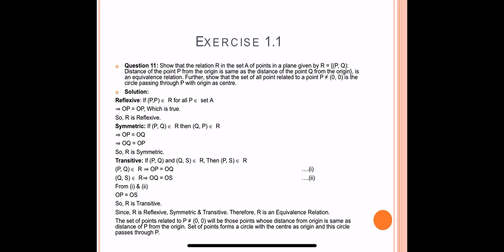For symmetric: if (P, Q) belongs to R, then we have to prove (Q, P) belongs to R. Now (P, Q) belongs to R means OP = OQ. Can we write OQ = OP? Yes. So R is symmetric.